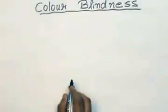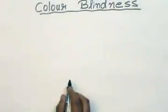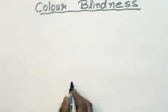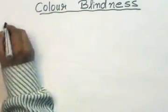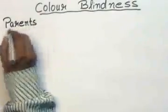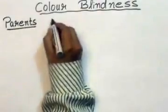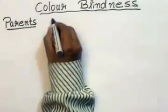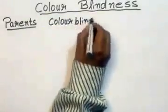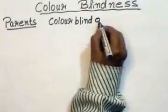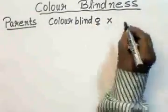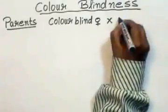Let us see what happens when a colorblind female is married to a normal male — parent generation. The female is colorblind, and the colorblind female is married to a normal male.